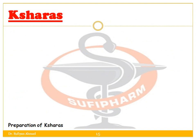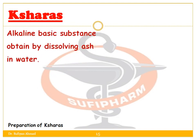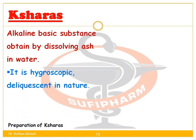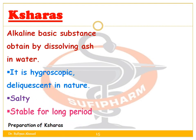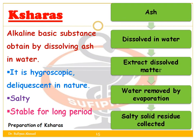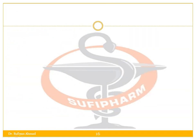Next is Ksharas — an alkaline basic substance obtained by dissolving ash in water. It is hygroscopic and deliquescent in nature, salty, and stable for a long period of time. In the preparation of Ksharas, ash is dissolved in water, the dissolved matter is extracted, water is removed by evaporation, and the salty solid residue is collected.